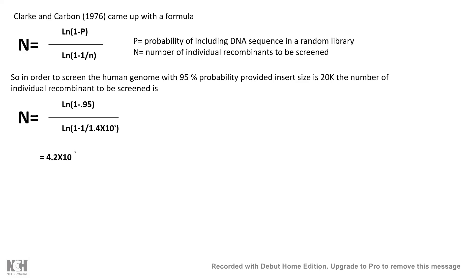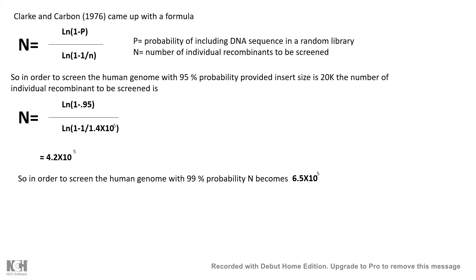If we consider screening the human genomic library with 95% probability and an insert size of 20 kb, plugging values into the Clark-Carbon formula gives us at least 4.2 × 10^5 recombinant colonies to screen — about four times the minimum estimate. For 99% probability, even more colonies are required, and screening 6.5 × 10^5 or 4.2 × 10^5 colonies was not a joke — it was extremely challenging.